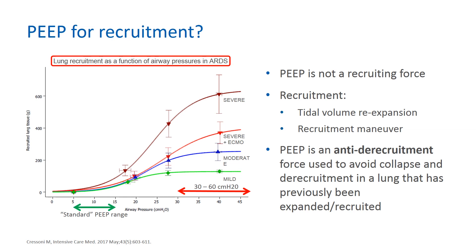Thus, increasing PEEP will overdistend the already aerated lung and will recruit a small amount due to the increase in pleural pressure. There is recruitment occurring at each tidal inflation that is called re-expansion. However, a collapsed lung can be recruited by using a transient increase in transpulmonary pressure, which is called a recruitment maneuver. PEEP is then used to avoid collapse and de-recruitment of a lung that has previously been expanded or recruited.